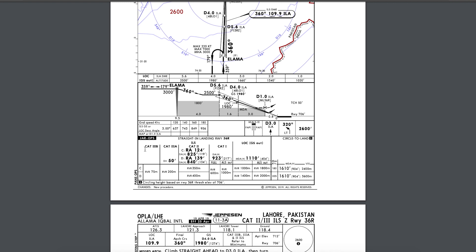Cat 3 means that if you virtually have zero visibility, you can land on the runway. Cat 3 is based on runway visual range. Cat 3 is the most capable approach category, allowing landing in extremely low visibility conditions.